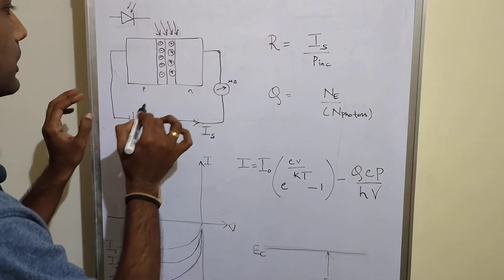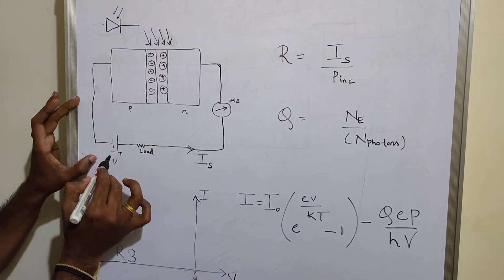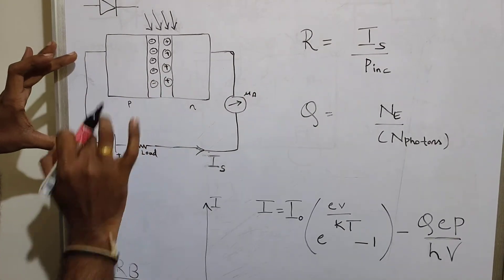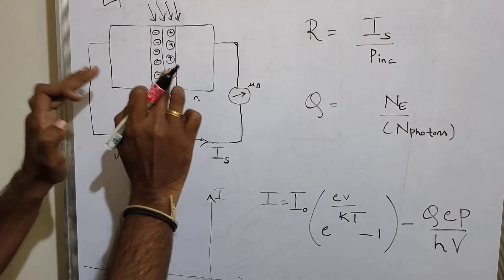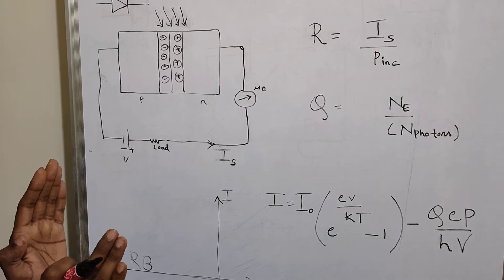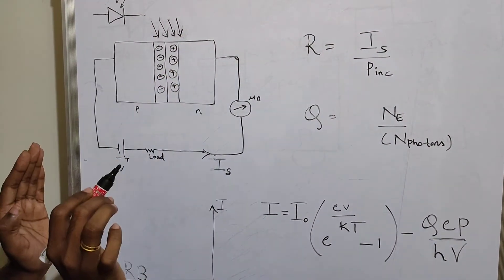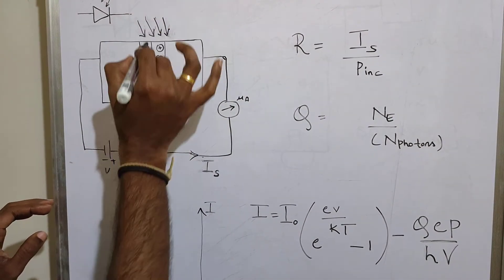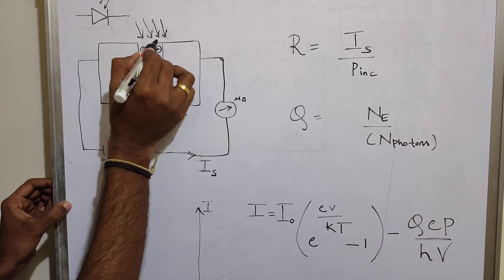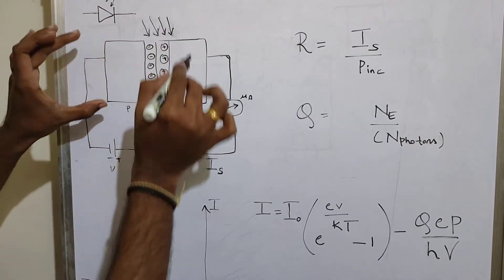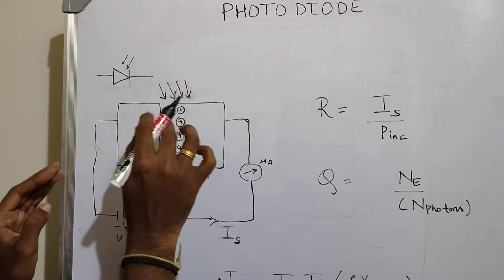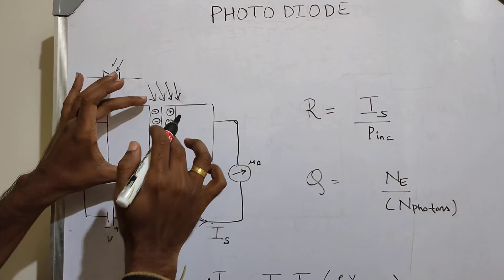We are applying voltage in reverse bias — the N side is connected to the positive terminal and the P side to the negative terminal. In this configuration, this voltage alone will never cause current to flow in the circuit. The driving force is the photon. The photons are incident on this window, and when light falls on this particular window, electrons and holes are generated and current will flow.